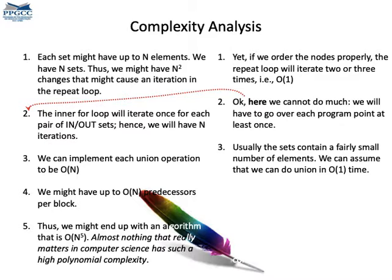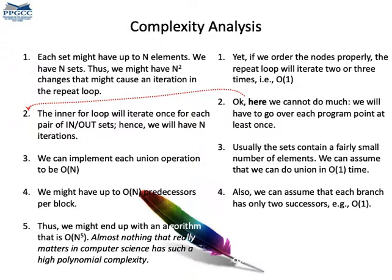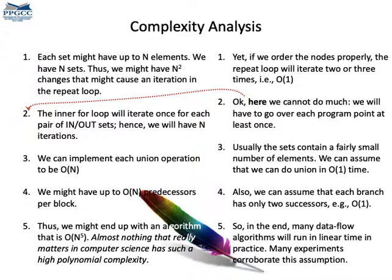About the set operations, typically these sets are small, so we can imagine that we can join them in constant time. We can also assume that the control-flow graph of a program is sparse. So each branch has at most two successors, and each node has at most two predecessors. That's a pretty reasonable assumption. In the end, we get an algorithm that, for all purposes, runs in linear time on the number of instructions in the program. So although the theoretical complexity is high, the practical complexity is pretty okay.